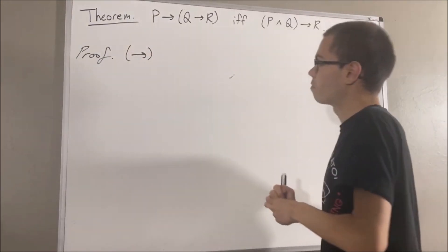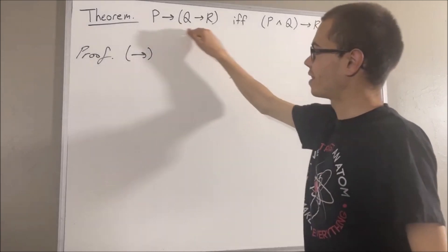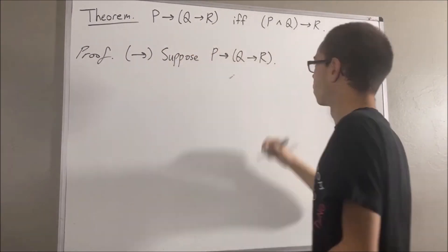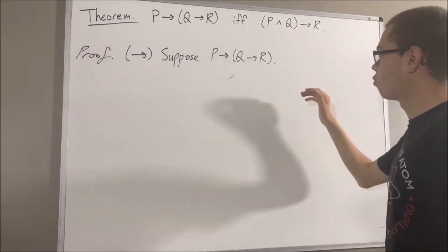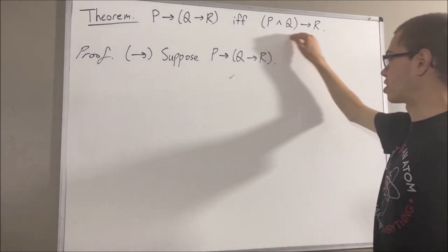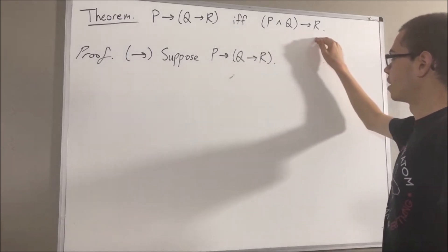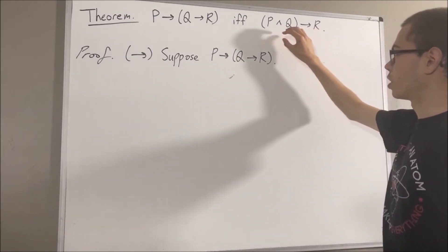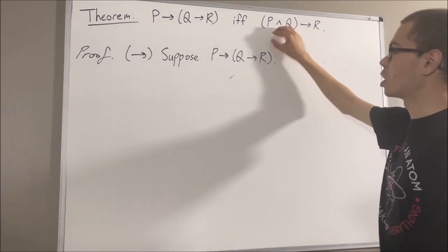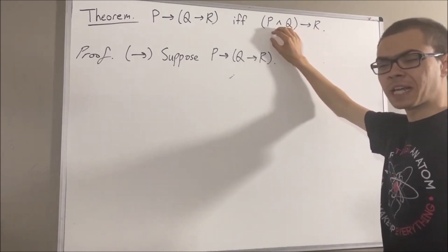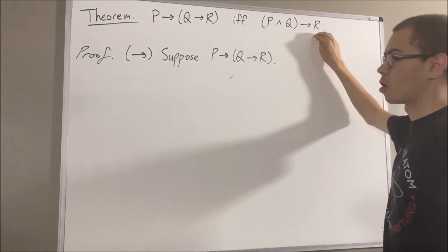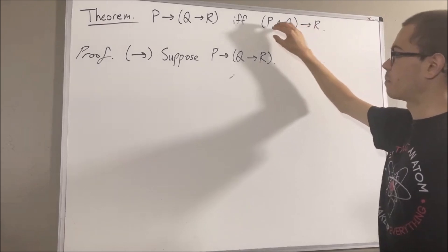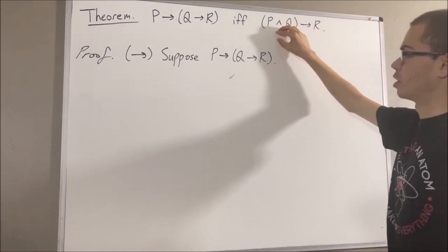To do so, suppose that P implies (Q implies R) is true. From here, we want to show that (P and Q) implies R is true. To prove this, we want to show that under the assumption that P and Q is true, it follows that R is true. So let's suppose that P and Q is true.